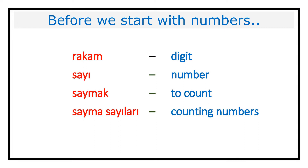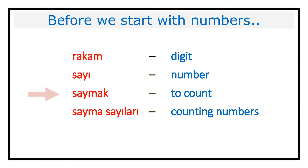Just before we start with the numbers, let's cover some related terminology. Rakam — rakam means digit. Sayı — sayı means number. Saymak — saymak is a verb which means to count. And last, sayma sayıları — sayma sayıları means counting numbers.